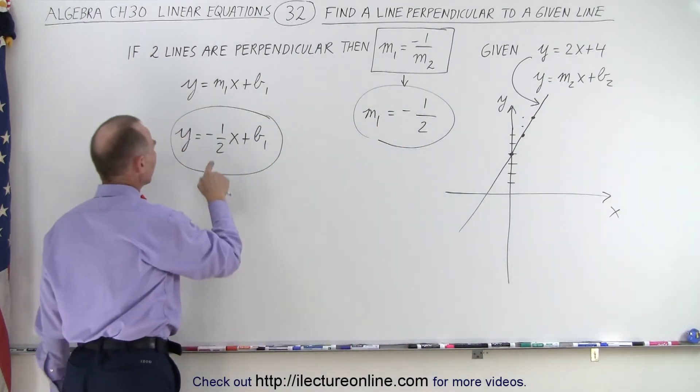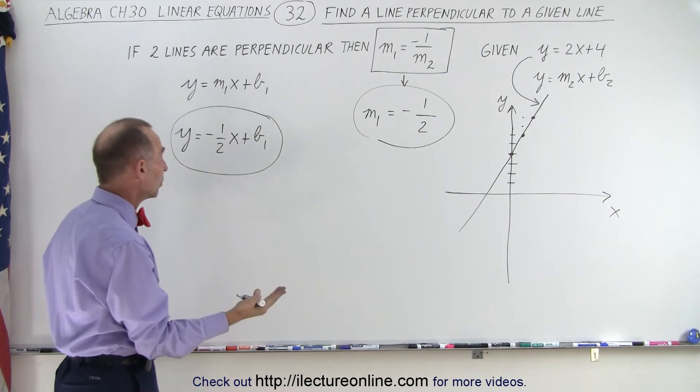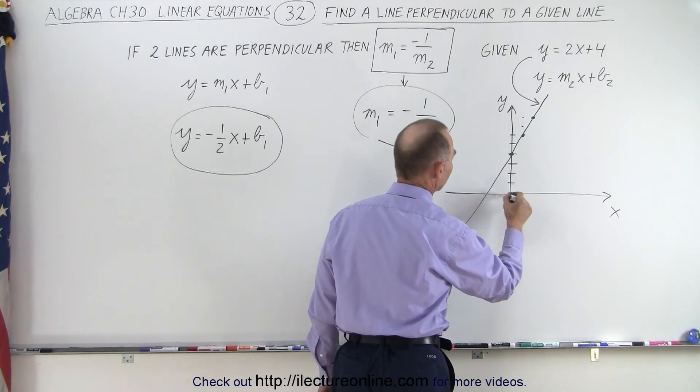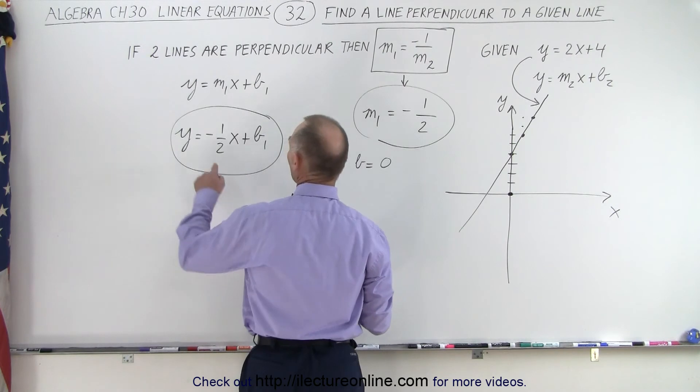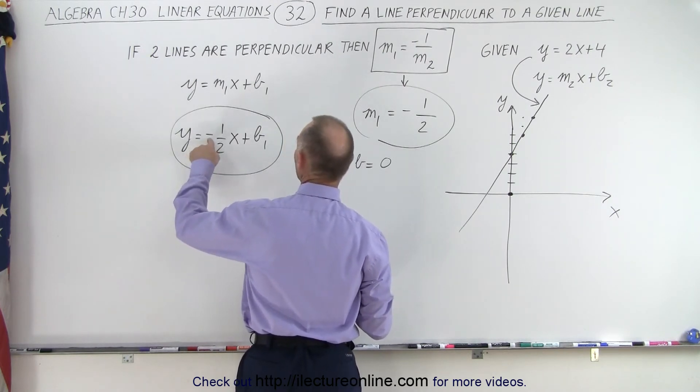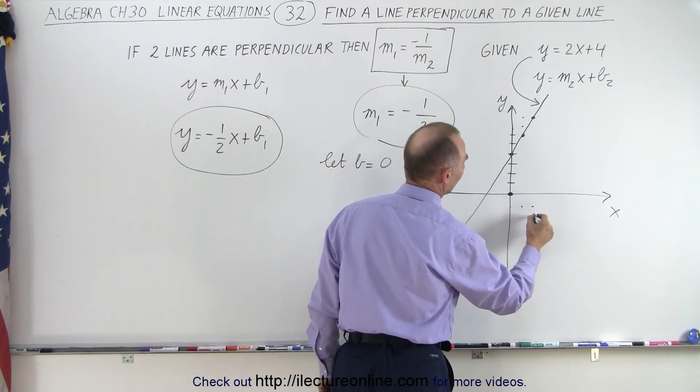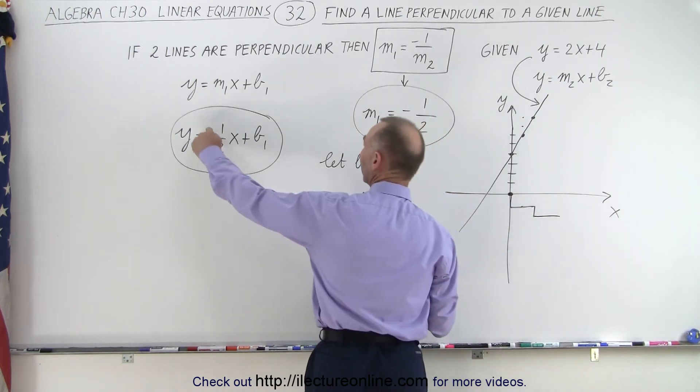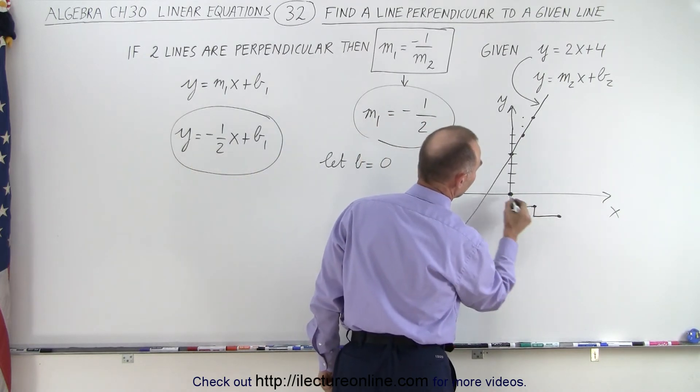Now, let's find this right here. Now it doesn't matter what b we use. We can let b equal 0, and if we do that, we'll pick that point. So we're going to let b equal 0. Then notice the slope will be negative 1 over 2. So we've got down 1 over 2, down 1 over 2, and notice we get these points right here and if we connect them, we get a line that is perpendicular to our first line.